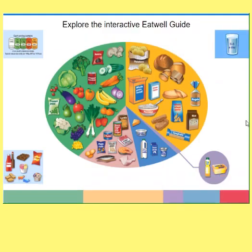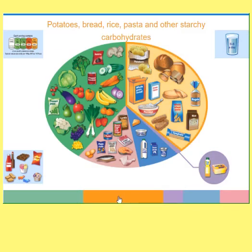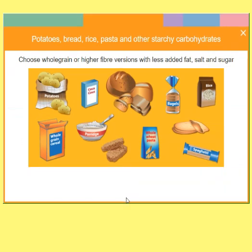Clicking on carbohydrates — that's another big part of our Eat Well plate. It tells us that we can choose wholegrain or higher fibre versions with less added fat, salt and sugar, and it gives some suggestions like pasta, porridge, oats and other things that fall into that category of carbohydrates.